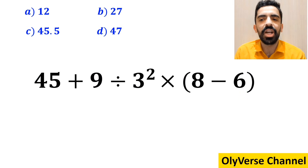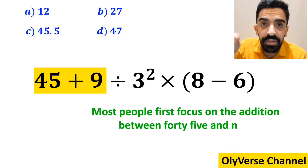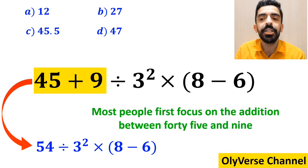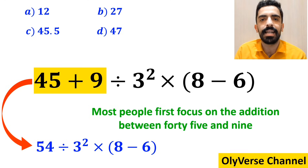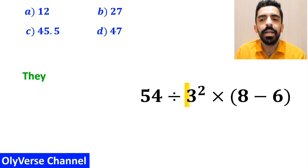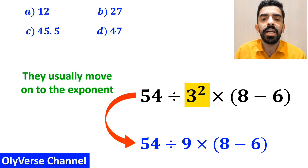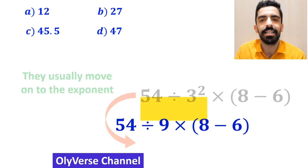To solve this question, most people first focus on the addition between 45 and 9, and they rewrite the whole expression as 54 divided by 3 to the power of 2, multiplied by 8 minus 6 inside the parenthesis. In the next step, they usually move on to the exponent and rewrite this expression as 54 divided by 9, multiplied by 8 minus 6 inside the parenthesis.